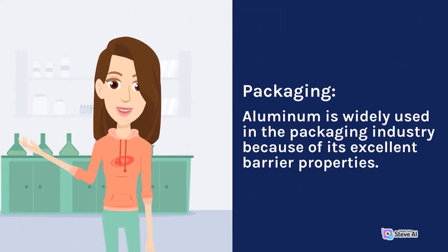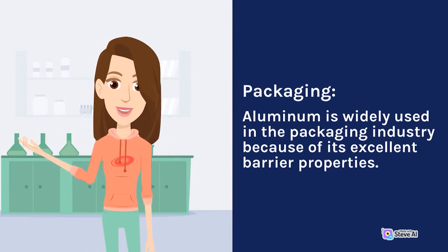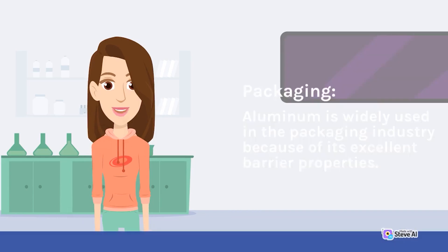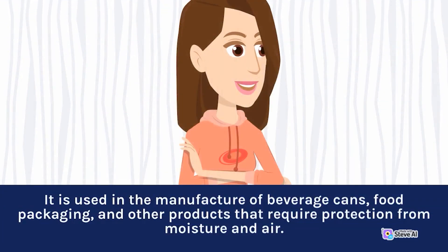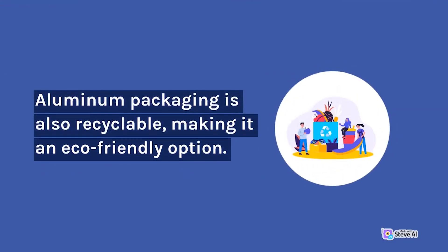Packaging: Aluminum is widely used in the packaging industry because of its excellent barrier properties. It is used in the manufacture of beverage cans, food packaging, and other products that require protection from moisture and air. Aluminum packaging is also recyclable, making it an eco-friendly option.